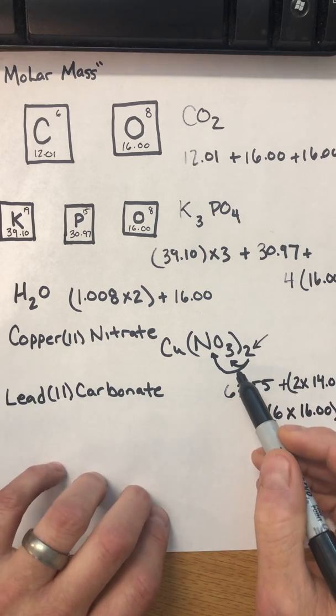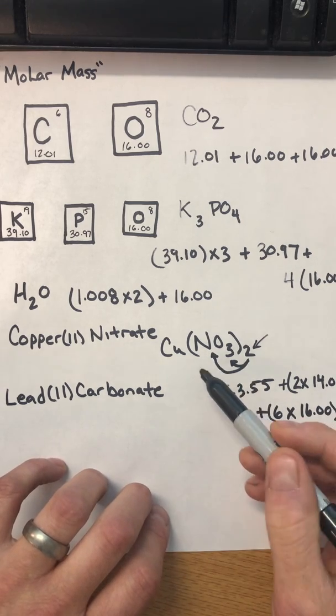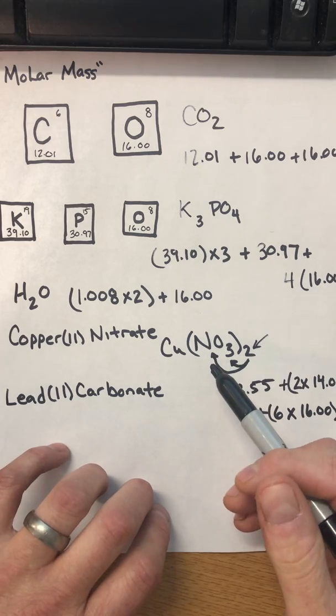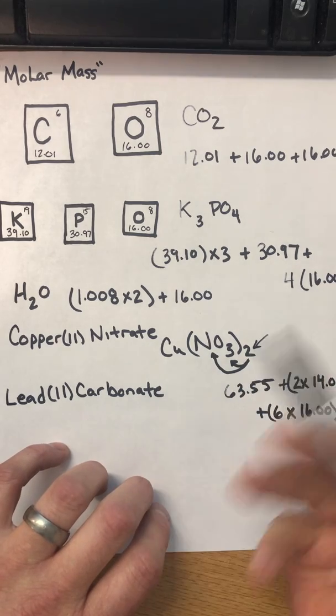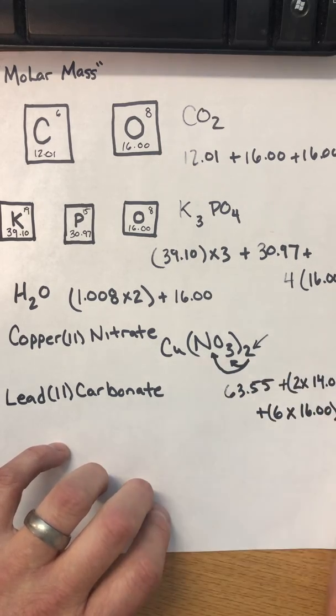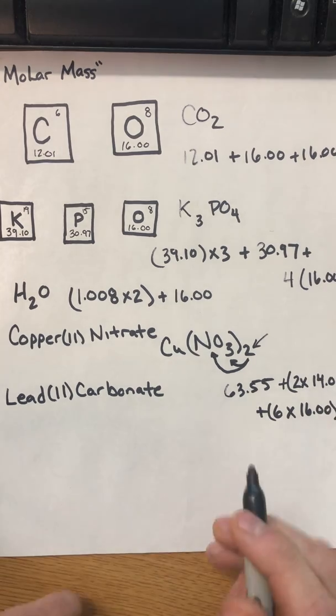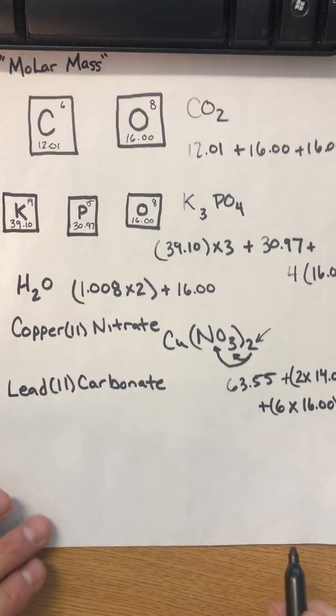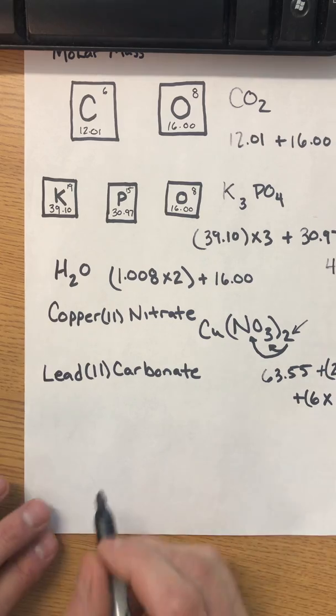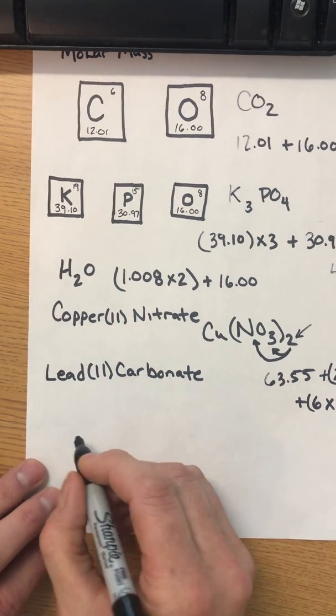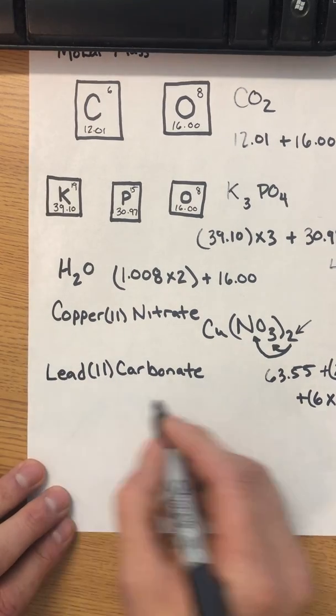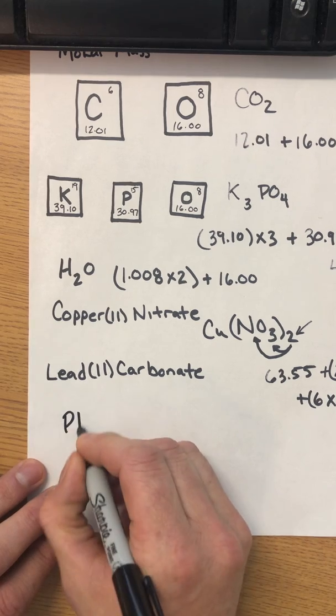So the biggest mistake people make is getting the formula wrong and they don't have the right subscripts. And then they don't have the right number of atoms. They've counted them up wrong and you get the wrong molar mass. Now, with lead and some other elements out there, we have a kind of a funny thing.